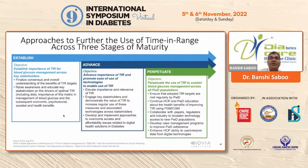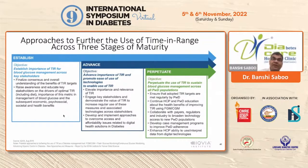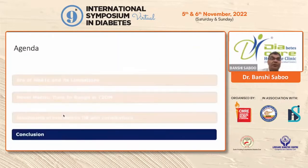The approach to further use of time in range involves three stages of maturity. First, establish the importance of time in range for blood glucose management across key stakeholders. Second, advance the importance of time in range and promote ease of use of technology to enable its use. Unless our patients understand it, we first need to increase awareness among healthcare professionals and then promote continuous glucose monitoring technology. Third, perpetuate the use of time in range to sustain blood glucose management across all persons with diabetes.